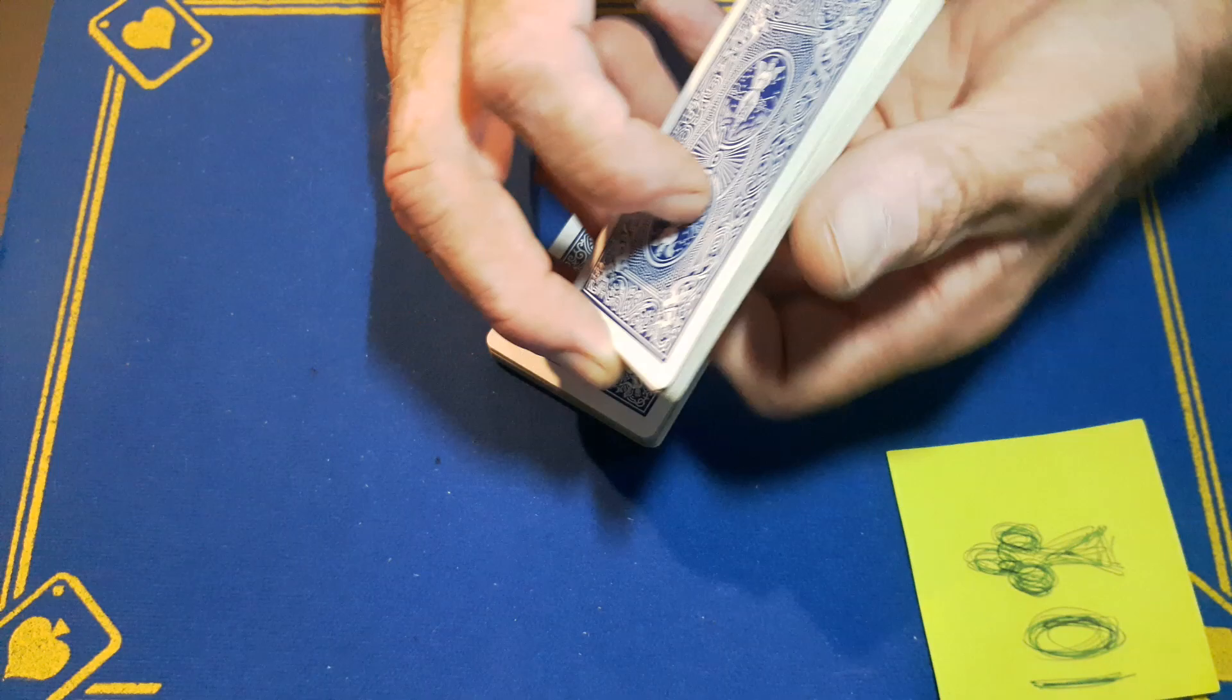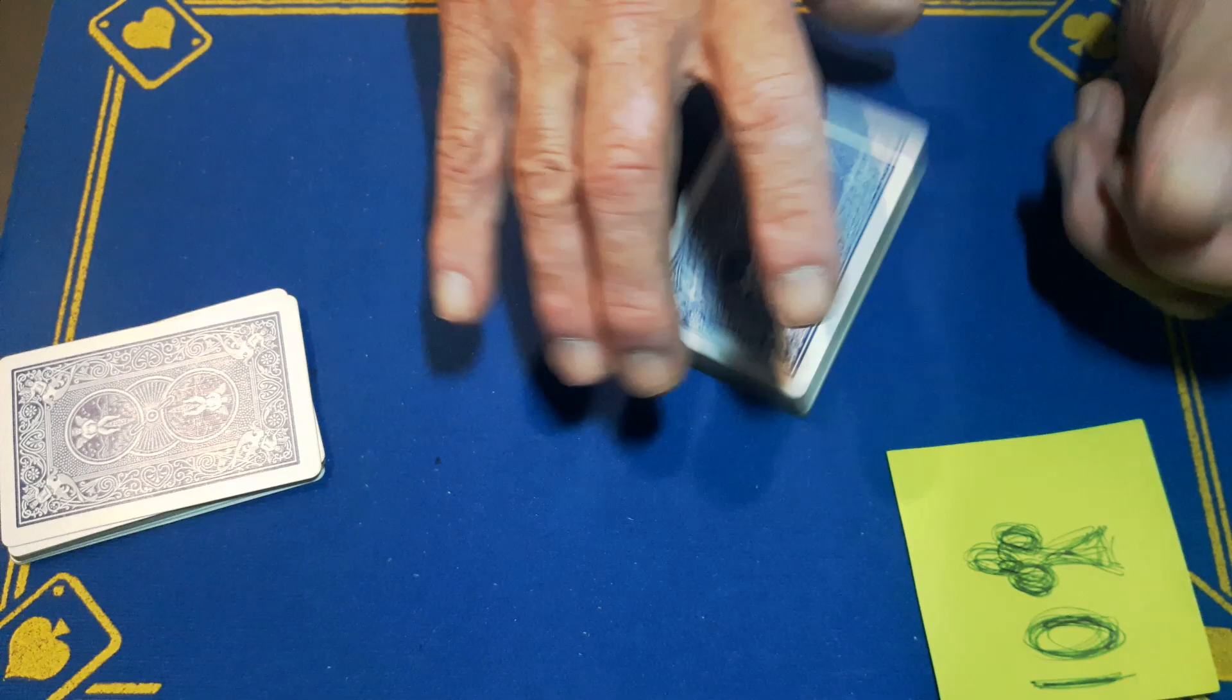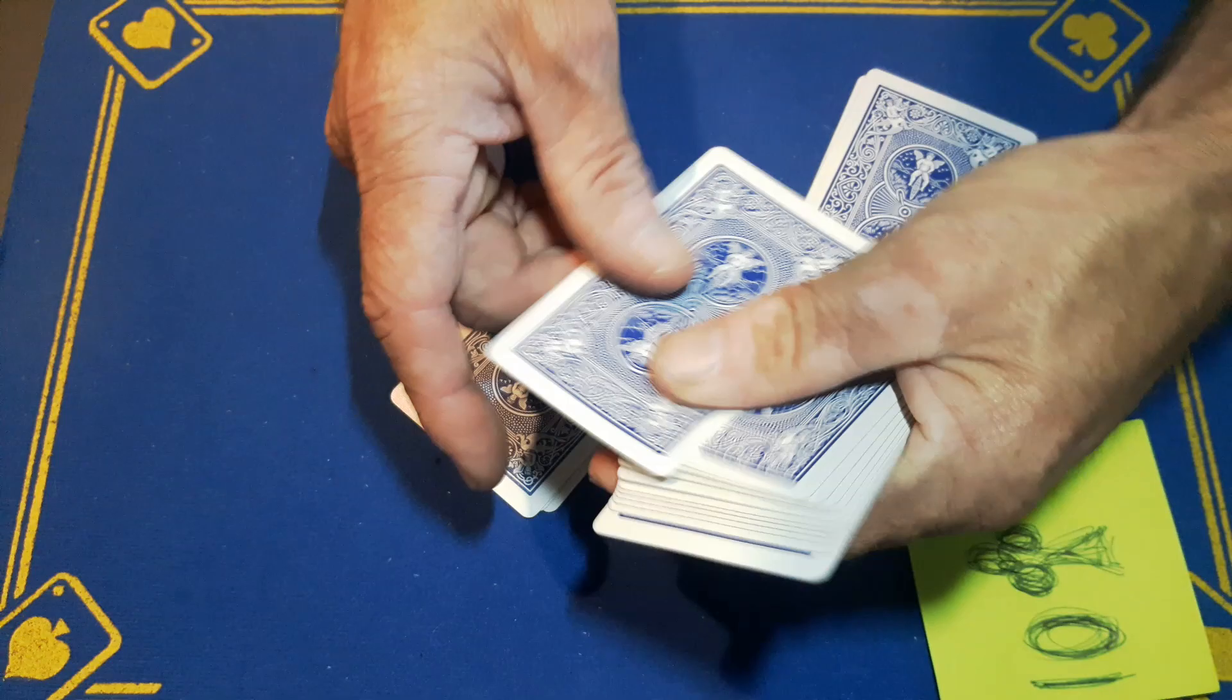So I want you to cut about a third of the deck, say. So let's say they cut about this many. You can see that there's enough there. While they're counting these cards, you can give this a fake shuffle if you want, but all you're going to do is cut at your crimp and bring it to the top.